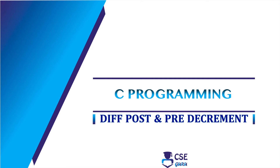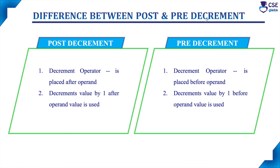Welcome to CSE Guru. In this session, we will discuss the difference between post decrement and pre decrement operator. The decrement operator is represented by the double minus symbol and this is a unary operator since it works with a single operand. This decrement operator decrements the value of the variable by one.